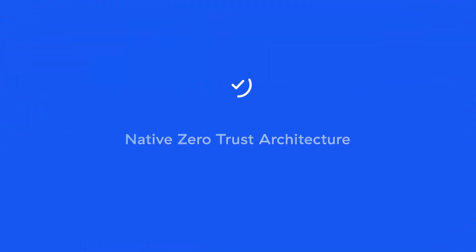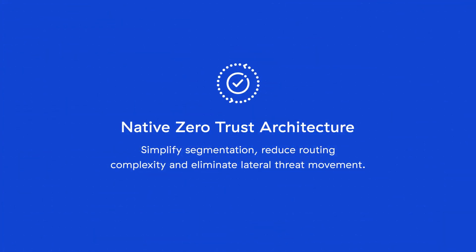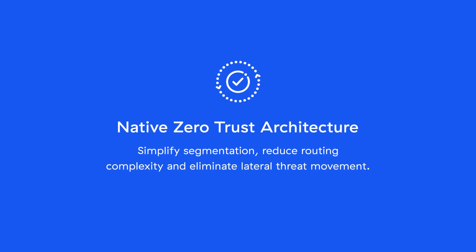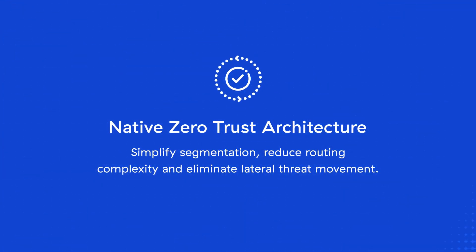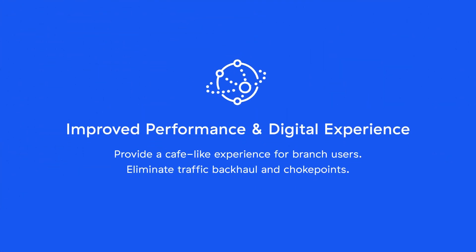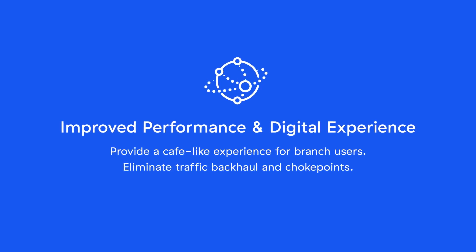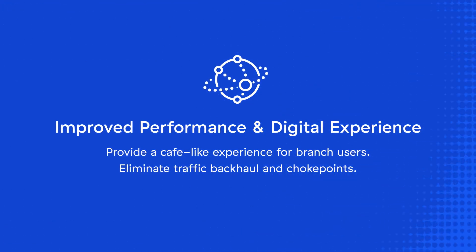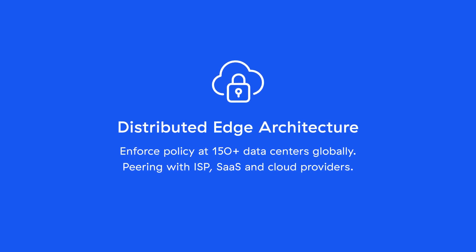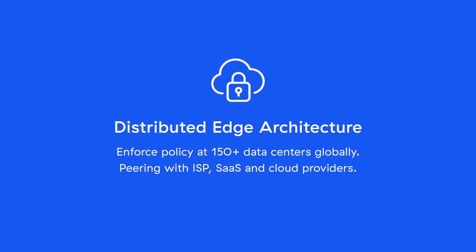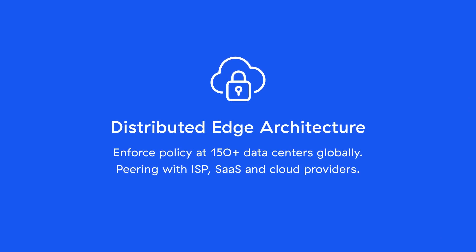Zero Trust SD-WAN allows you to simplify your branch network, reduce cost and complexity, and deliver a cafe-like experience to your users. By combining industry-leading SSE services from the AI-powered Zero Trust Exchange platform with simple connectivity for users, locations, and clouds, infrastructure teams can move towards a single-vendor SASE framework. The Zscaler solution not only improves security but also delivers a better user experience by eliminating traffic backhaul and firewall choke points. With cloud-native scale and enforcement at over 150 data centers across the globe, Zscaler SD-WAN helps transform your networking and security for the cloud-first era.